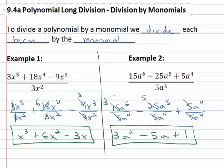When we're dividing a polynomial by a monomial we must make sure we divide each term by that monomial.